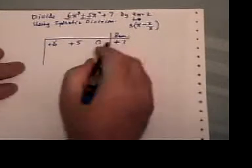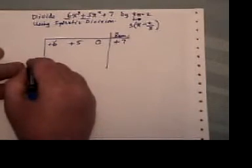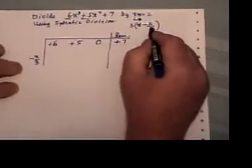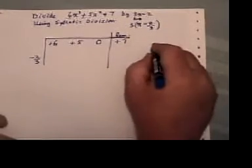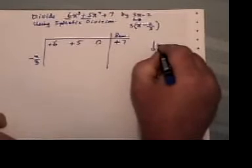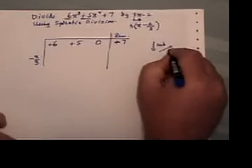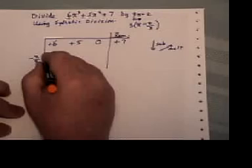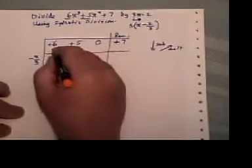This is going to be my remainder column. Now the number I'm going to put down here is negative 2 thirds, exactly the same as it's there. And if I do that, my pattern is going to be subtract and then multiply.